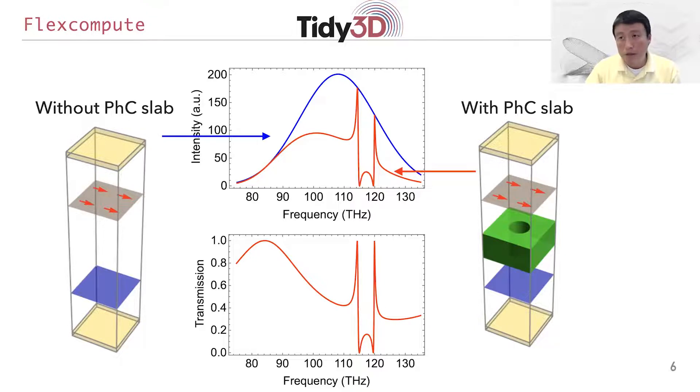We then put the photonic crystal slab in and that produced the red spectrum here on the top. That's the amplitude of the transmitted wave. We then take the ratio between the spectrum with and without the photonic crystal slab, and that gives you the nice transmission spectrum at the bottom, which is the spectrum that we showed in the very beginning of this tutorial.